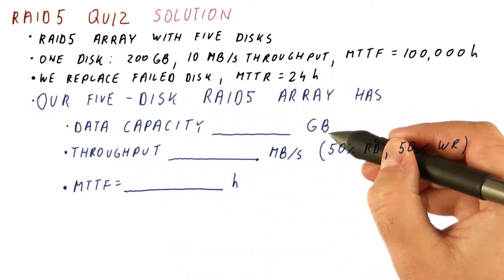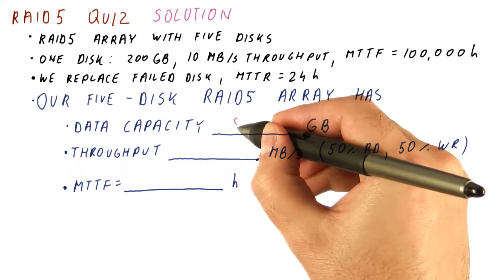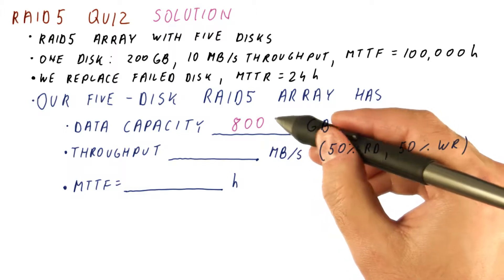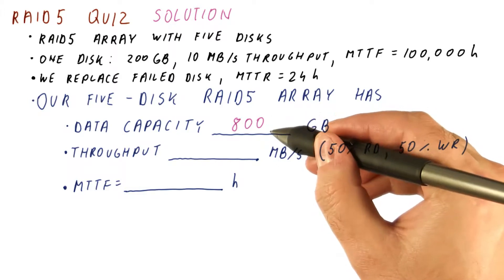The data capacity for RAID 5 is just like for RAID 4, 800 gigabytes. Effectively, we still sacrifice one disk worth of capacity to parity.